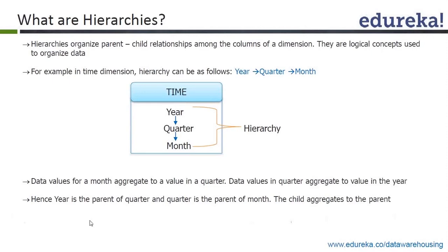If you aggregate the values for three months you can form a quarter, and for four quarters you can form the data values for a whole year. So in this case, year is the parent of quarter and quarter is the parent of month.